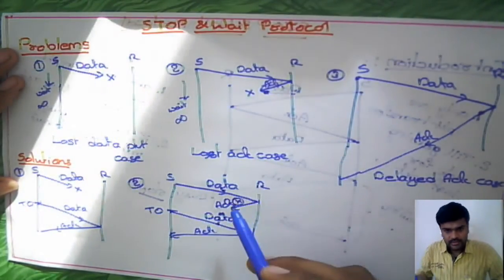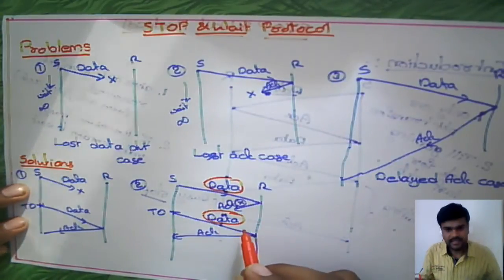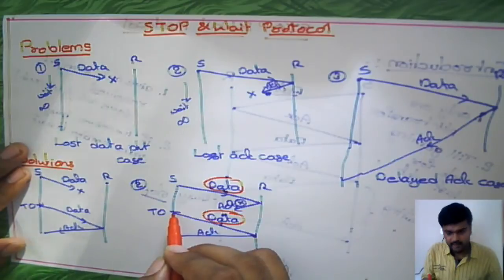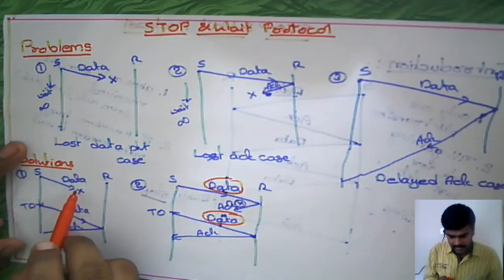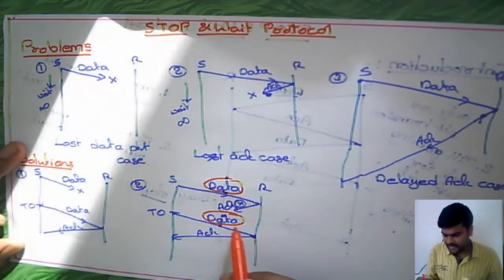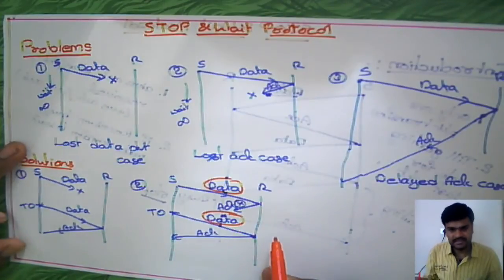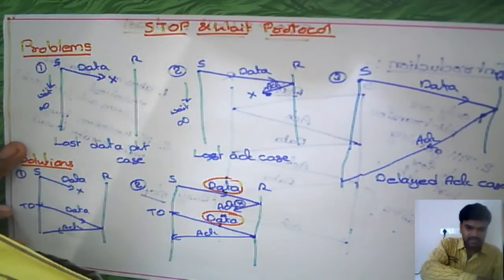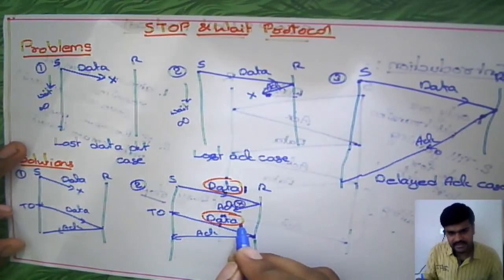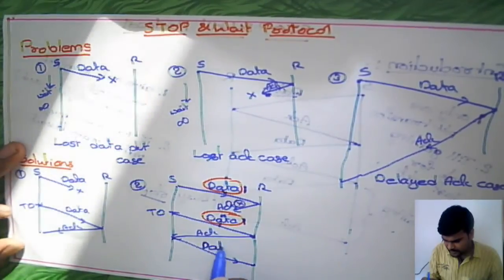Here, if you observe, the first data packet sent and the retransmitted packet are the same, because due to the acknowledgement being lost, the sender waited till timeout and then retransmitted the same packet. But the receiver is assuming these two are different packets — this is the problem at the receiver side. To resolve this, we introduce sequence numbers for data packets. Data packet 1 is sent, retransmitted again as data packet 1, and then data packet 2 is sent.